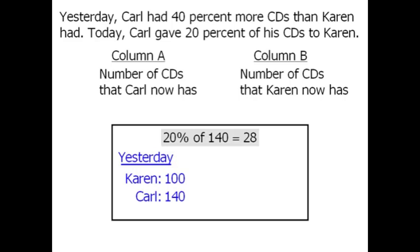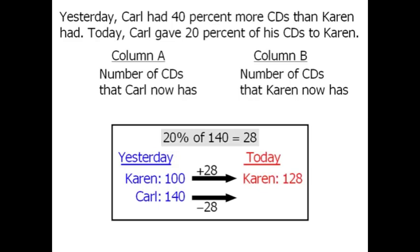This means that Karen's CDs increased by 28, giving her 128 CDs, and Carl's CDs decreased by 28, giving him 112.